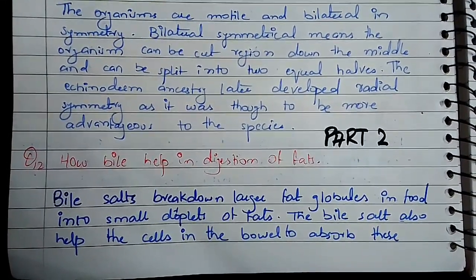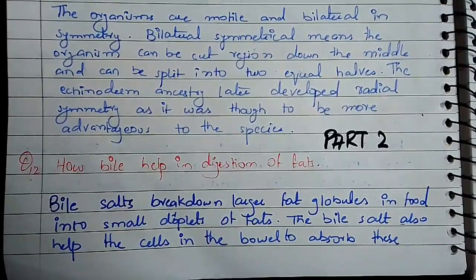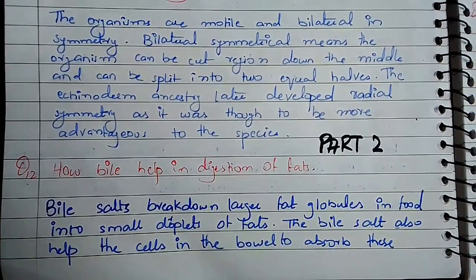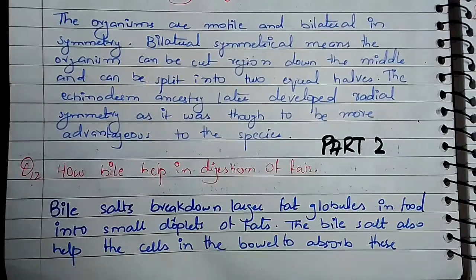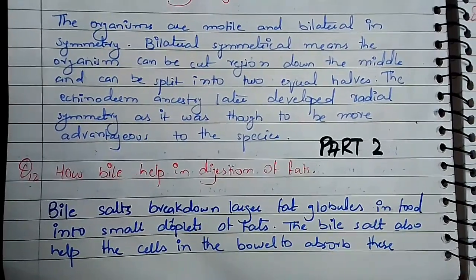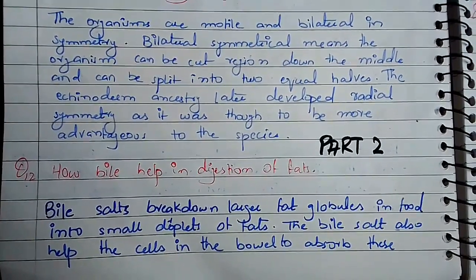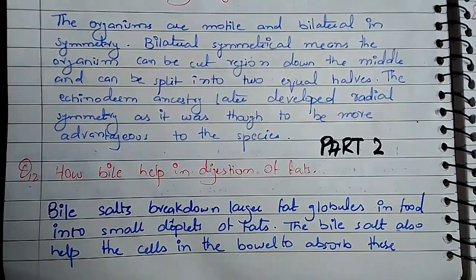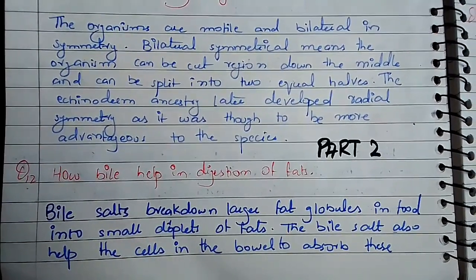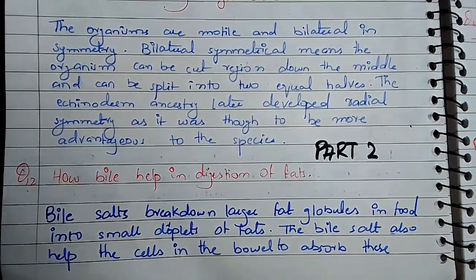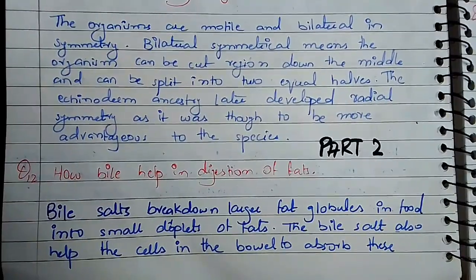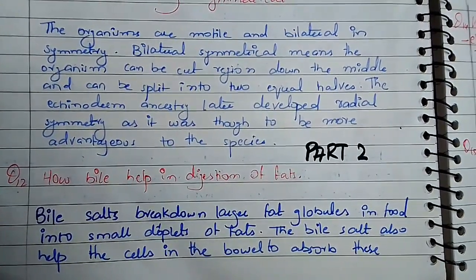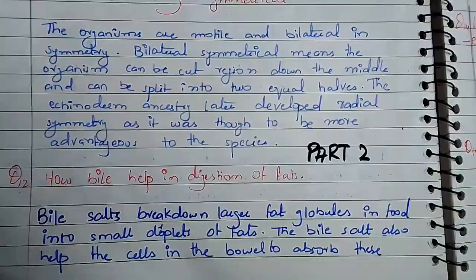Question number 12: how does bile help in digestion of fat? Bile works in emulsification of fat. It breaks down large fat globules into smaller droplets of fat. The bile salts help the cell to absorb fat droplets easily, so this helps to emulsify fats.